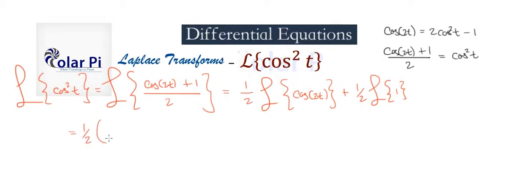What we have is the same as one-half. The Laplace transform for cosine 2t is s divided by 4 plus s squared. The Laplace transform of the constant 1 is 1 over s, and so here we are. We're done.